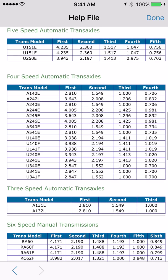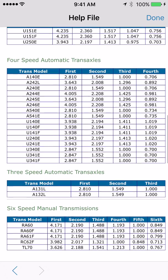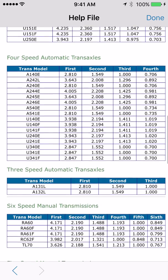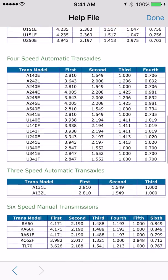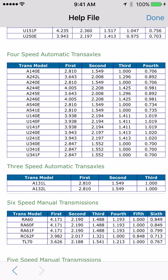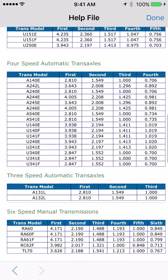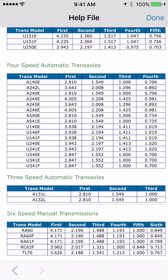At the top of the page it shows a five-speed automatic transmission, so our transmission is a five-speed. The U151F transmission model is the second one down. There are five columns going across for the gear ratios of first through fifth gears. Write these down: 4.235 for first gear, 2.360 for second, 1.517 for third, 1.047 for fourth, and 0.756 for fifth.